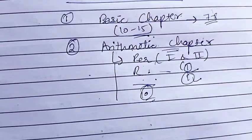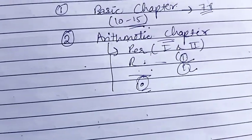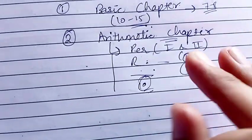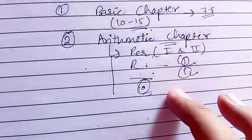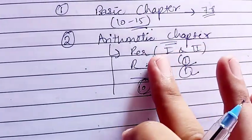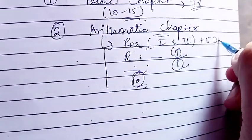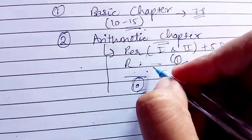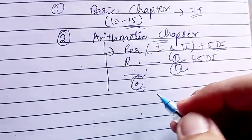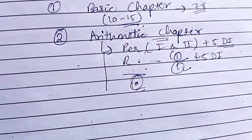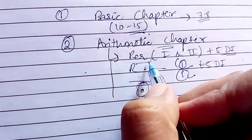For mensuration and permutation, if you have time left, you can go for those chapters. After completing arithmetic chapters, when you are doing percentage, try to solve five DIs based on the percentage chapter. Then for ratio, do five DIs on ratio. When doing simple interest, do five DIs based on simple interest. This is the right approach.